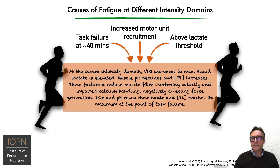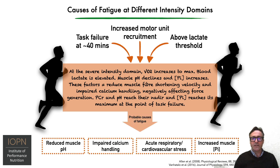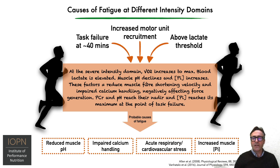At the severe intensity domain, VO2 increases to maximal, blood lactate is elevated, muscle pH declines, and inorganic phosphate increases. These factors result in reduced muscle fiber shortening velocity and impaired calcium handling, which negatively affects force generation. Phosphocreatine and pH reach their nadir, and inorganic phosphate reaches its maximum at the point of task failure. The probable causes in this domain are reduced muscle pH, impaired calcium handling, acute respiratory and/or cardiovascular stress, and increased muscle inorganic phosphate.